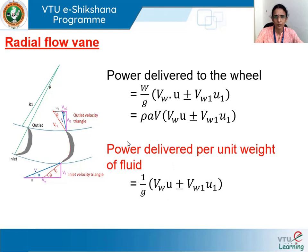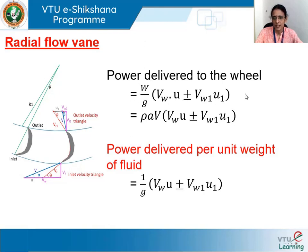Another very useful expression is the power developed per unit weight of the fluid flowing through the wheel. Since W is the weight of the fluid flowing per unit time, the power developed per unit weight is obtained by dividing the power expression by W, giving: 1/g · (Vw·U ± Vw1·U1).